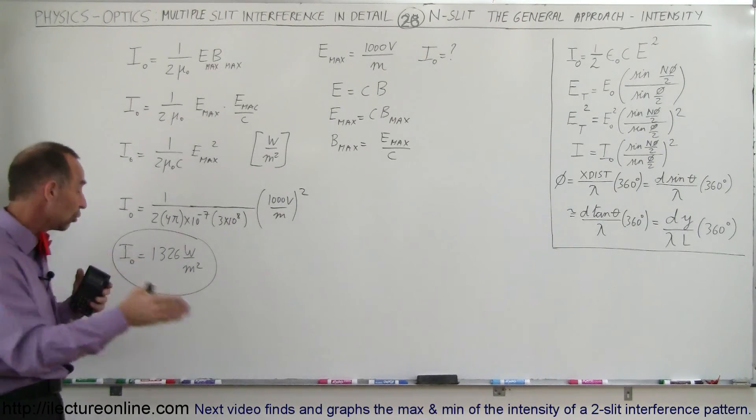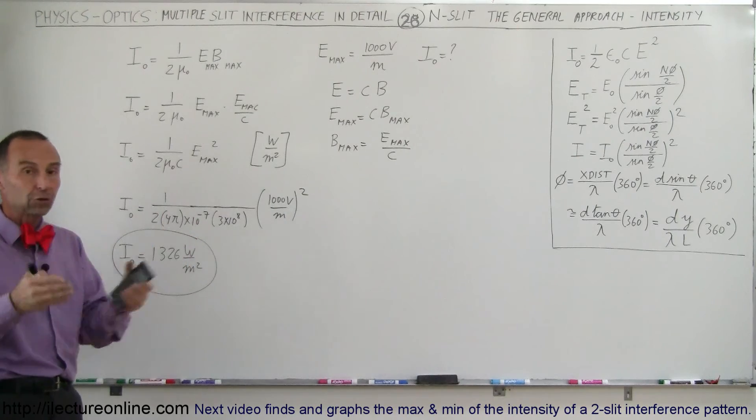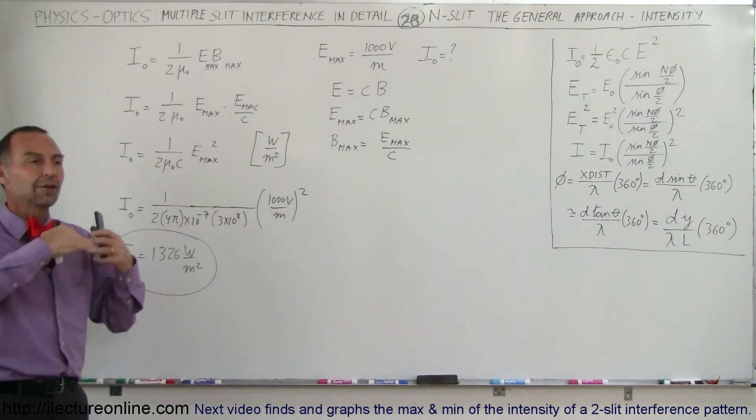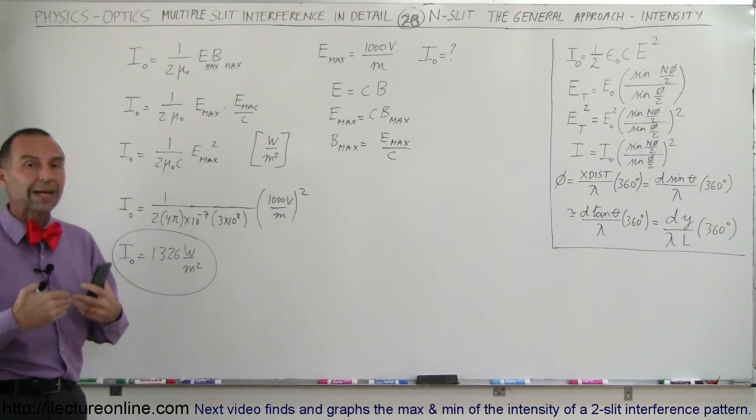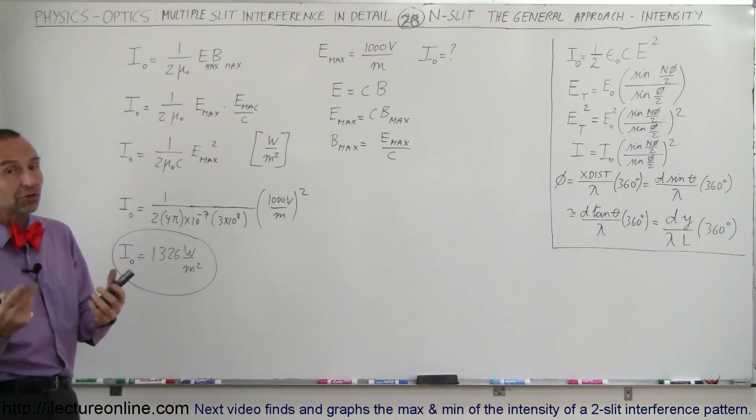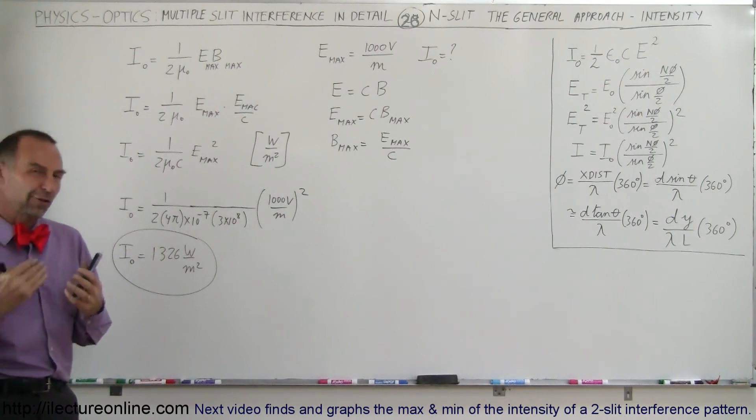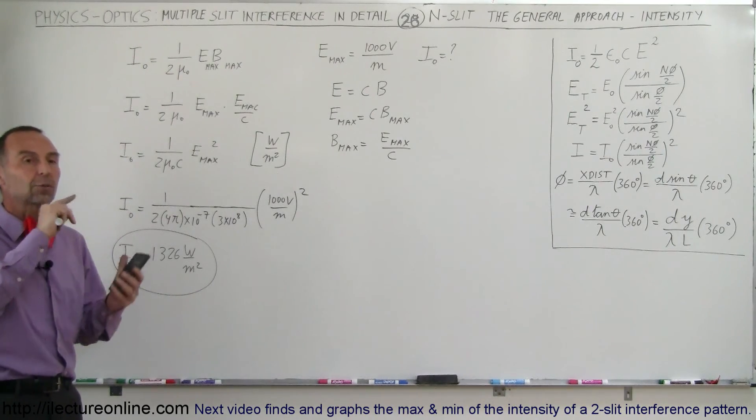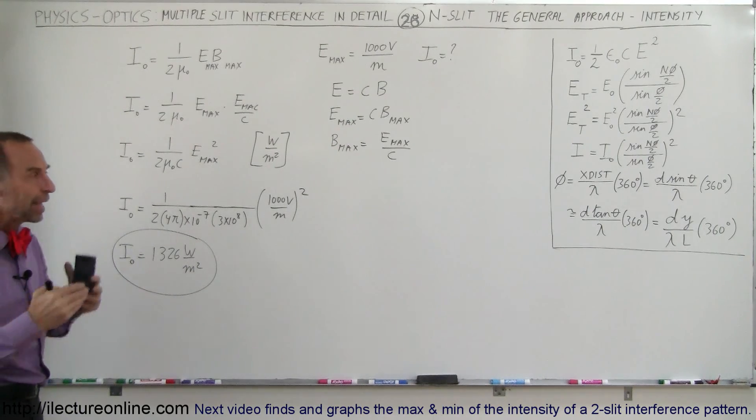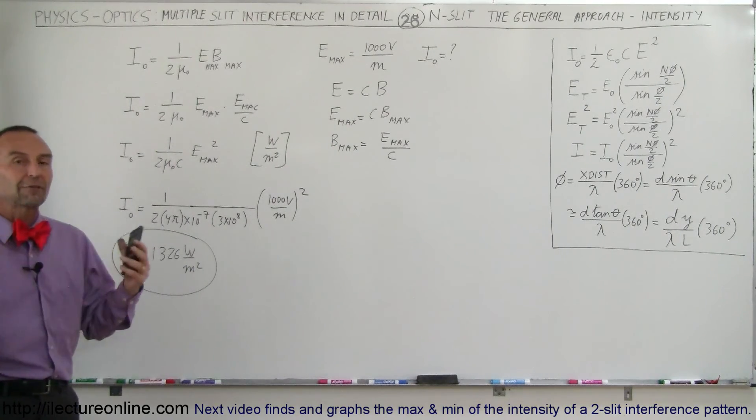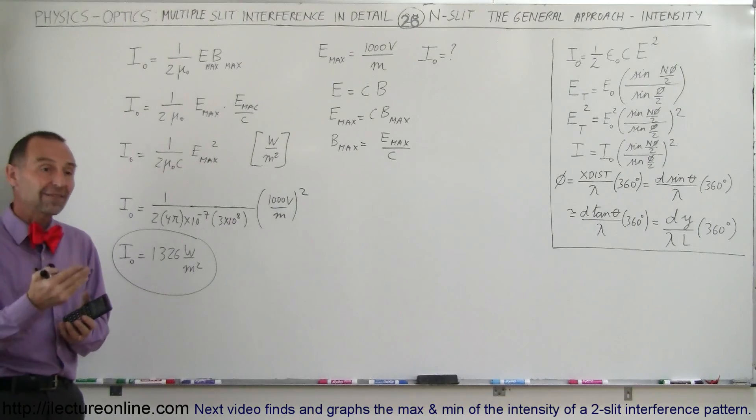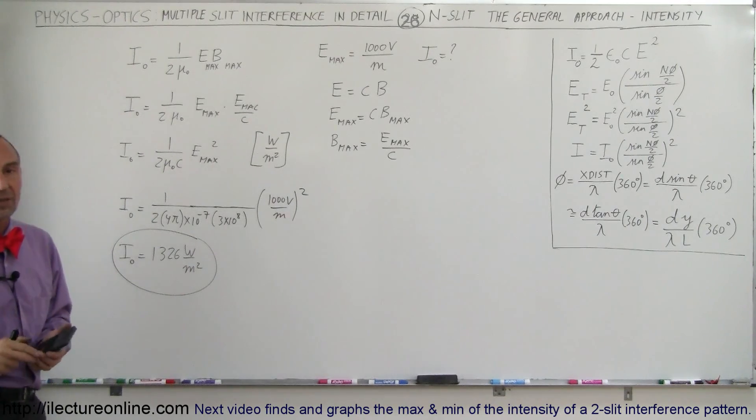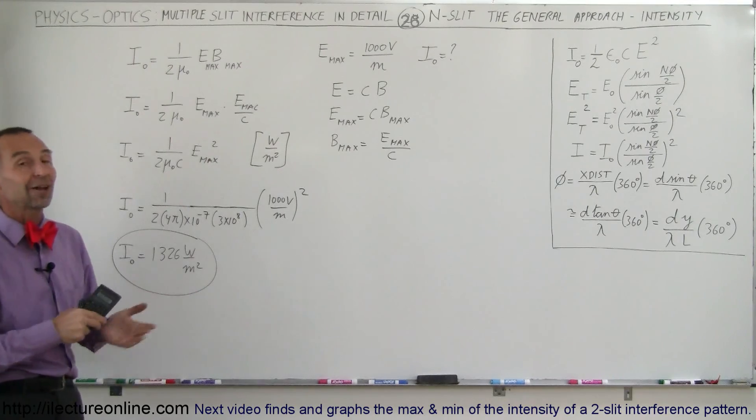We're now going to study a little bit more about what that interference pattern looks like for any number of slits. We know what it looks like for two slits, we know what it looks like for three slits, but what does it look like for n slits? So in the next videos, we're actually going to take a look at what the interference pattern looks like, and then we can tie it all together so you have a full understanding how to find the intensity anywhere along the interference pattern of a multi-slit interference situation. And that's how we do that.